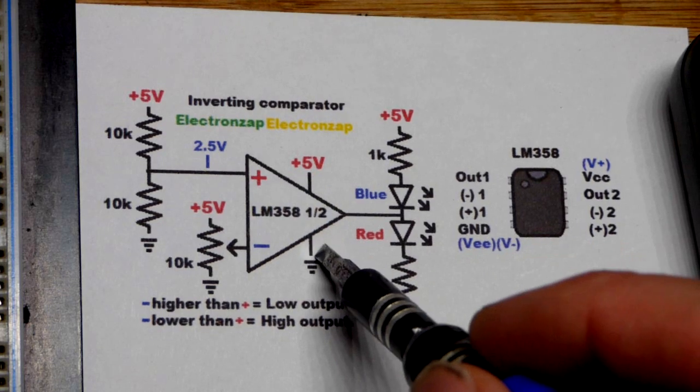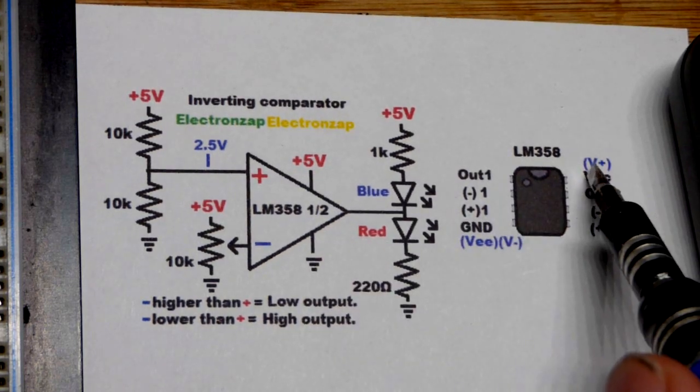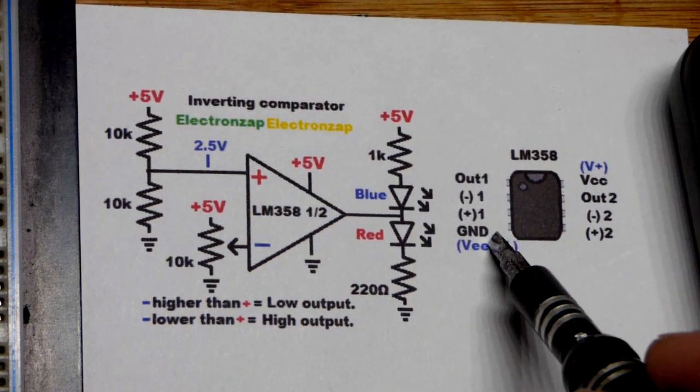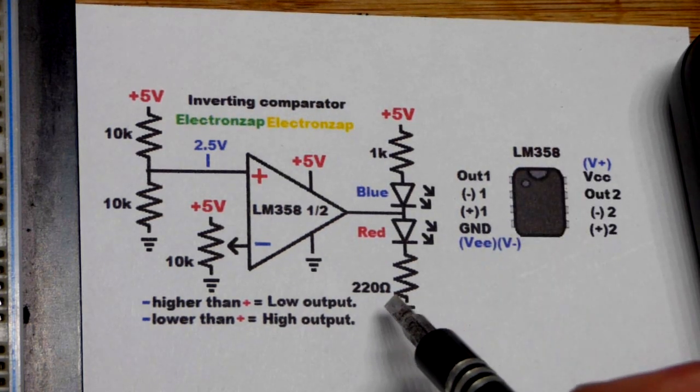So of course you always have to power the op amp at positive supply pin 8, negative supply pin 4 using the LM358.